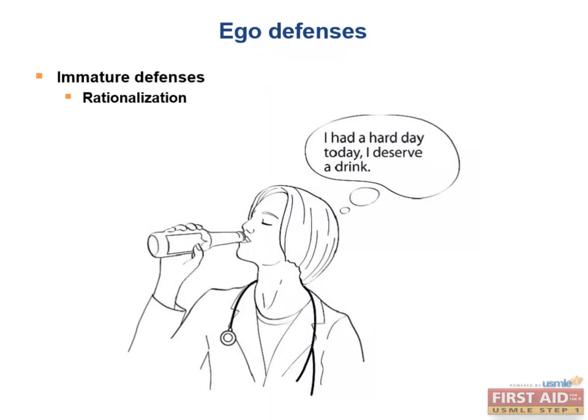Rationalization is a way of logically explaining an action or event even though it happened for another reason. An example would be a person who has a drinking problem but says she's had a hard day at work and needs a drink. There is no essential connection between working hard and drinking alcohol, but this person has used twisted logic to convince herself that there is. The famous Islamic scholar Al-Ghazali once said, 'Logic is the mind's way of justifying what the desires want.' So when people are rationalizing, they are not really being honest with themselves.